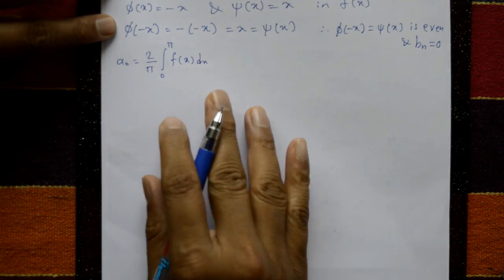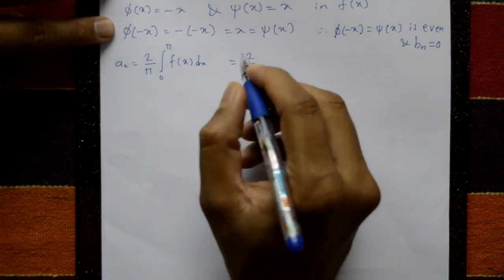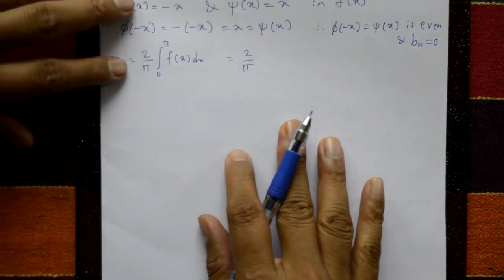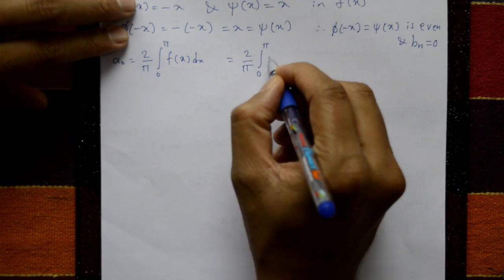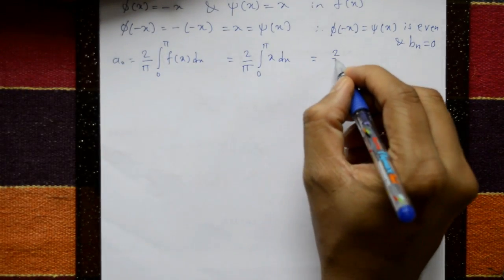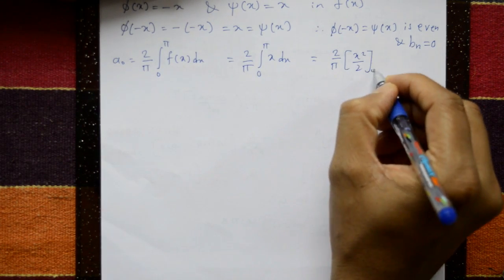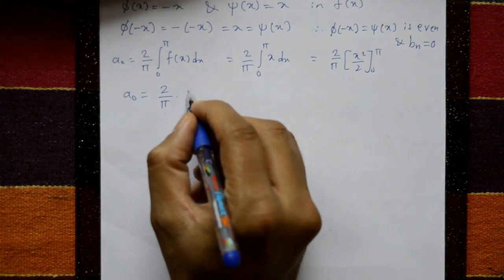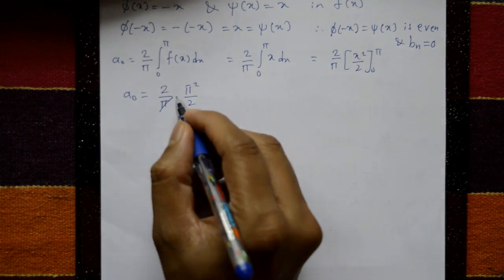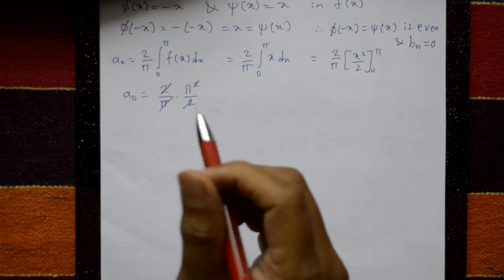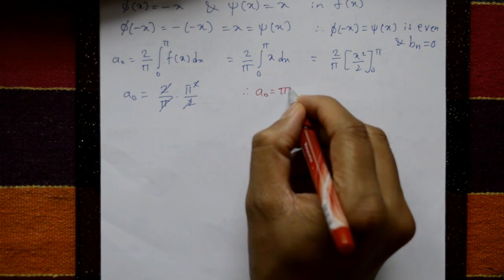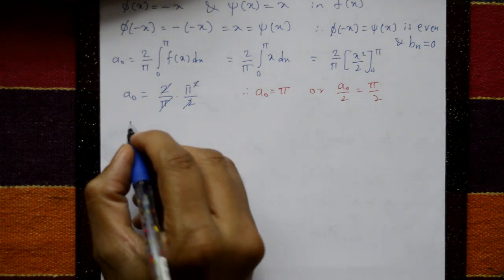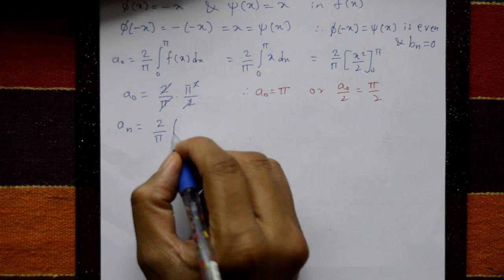a₀ = (2/π) × integral from 0 to π of f(x) dx = (2/π) × integral from 0 to π of x dx = (2/π) × [x²/2] from 0 to π = (2/π) × (π²/2) = π. Therefore a₀ = π and a₀/2 = π/2.